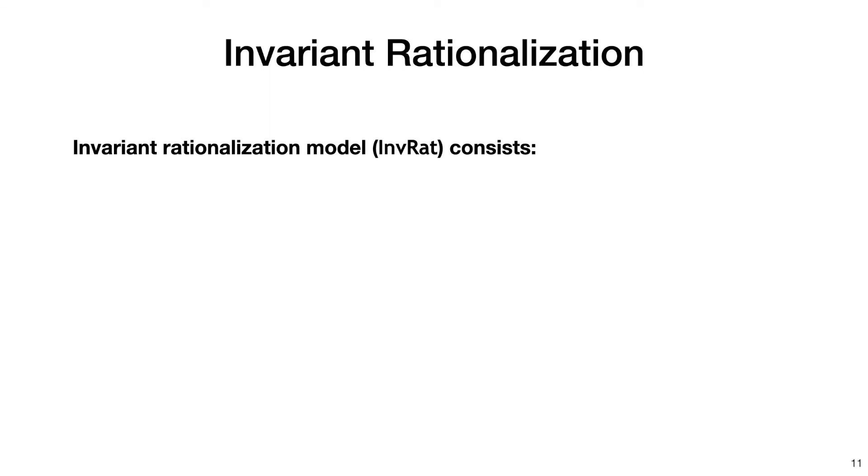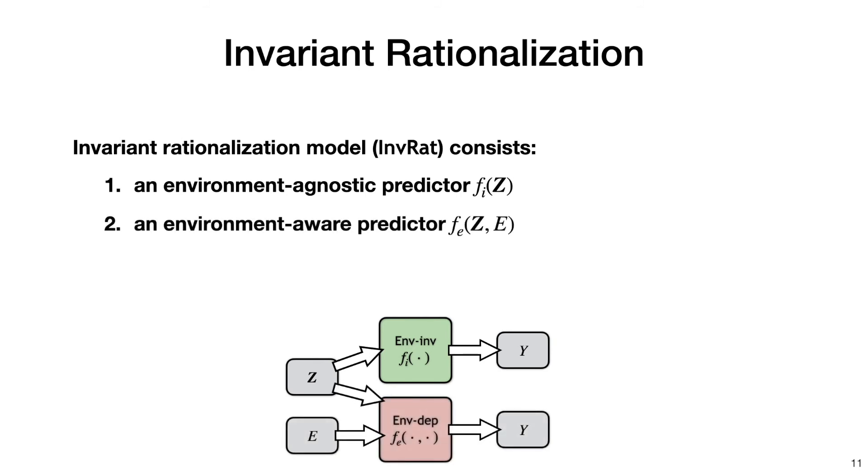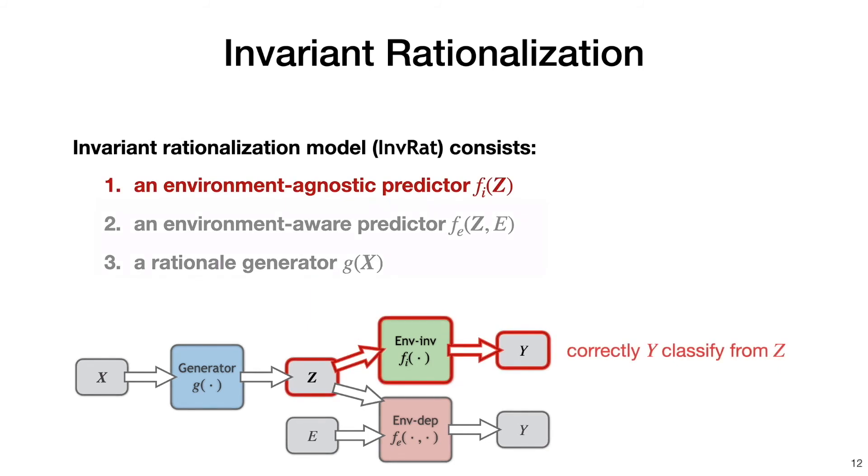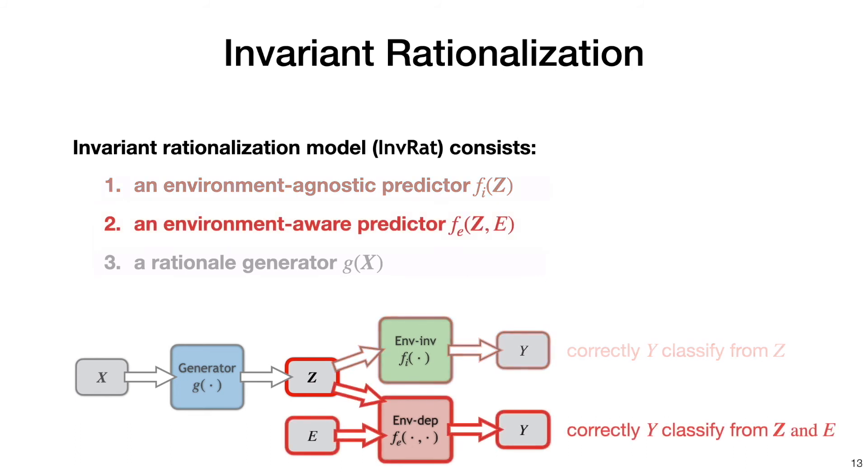An environment-agnostic predictor, an environment-aware predictor, and a rationale generator. The environment-agnostic predictor tries to predict y based only on the rationale. The environment-aware predictor also tries to predict y but based on both the rationale and the environment ID.